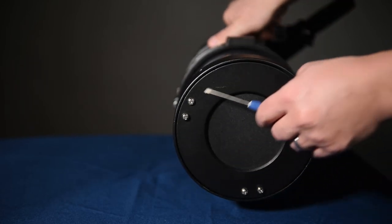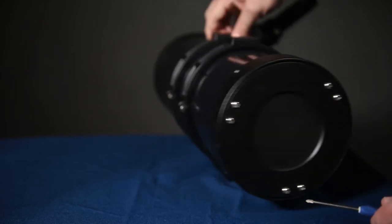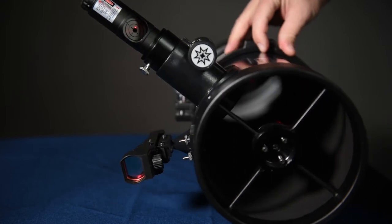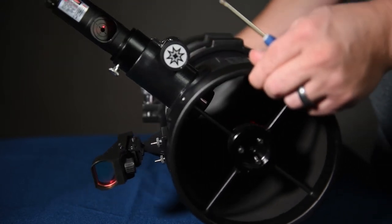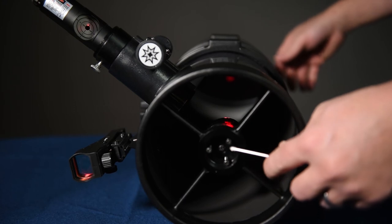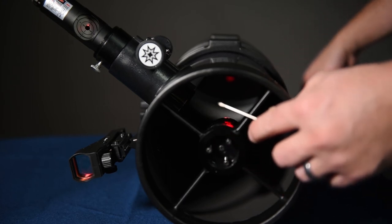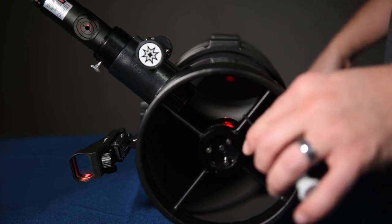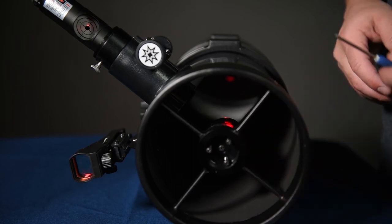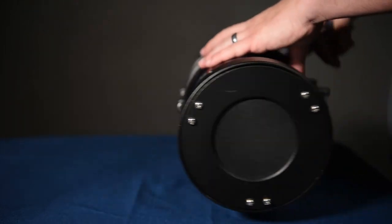And also the screws on the back. First, you'll want to adjust the ones here up front so that the laser pointer is pointing to the center of the primary mirror in the back. Do the exact same thing here until the laser is pointing right at the bullseye in the collimator.